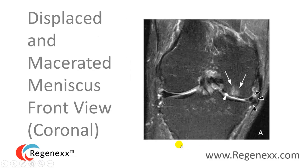A displaced and macerated meniscus is shown here in someone with no cartilage on this compartment. The other side has a normal dark triangle meniscus with a little bit of thinning cartilage, but this side has very little cartilage. The bone is bright, meaning the bone is getting bruised and likely has small fractures within it. The meniscus here is pushed out of the joint, has lots of white in it, and is macerated — meaning it has lots of different tears.